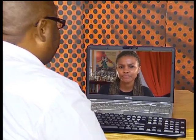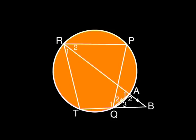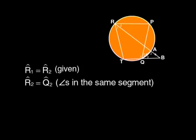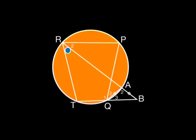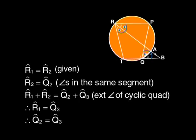There is not one correct order to use, but the order used must make sense — one fact must lead to the next. Start with R1 equals R2 (given). Then R2 equals Q2, angles in the same segment. Then R1 plus R2 equals Q2 plus Q3, exterior angle of cyclic quad RPAQ. Therefore R1 equals Q3, and since R1 equals R2 equals Q2, Q3 must equal Q2. So AQ bisects angle PQB. We have completed the first part of the question.